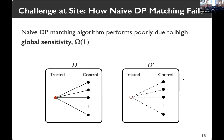When it comes to a privatized matching estimator, we can analyze its global sensitivity and add calibrated noise to obtain a DP version. However, it is shown that the global sensitivity is of order one, and thus the noise dominates the estimate. To see this, consider a pair of datasets where all individuals share the same covariate value and the estimate depends heavily on one individual. If we consider a neighboring dataset D-prime where that person's data is replaced, the estimates for D and D-prime can differ a lot due to the change in just one person.